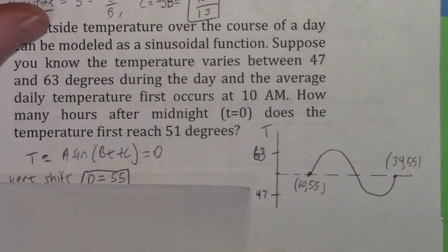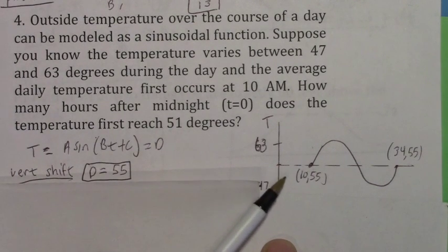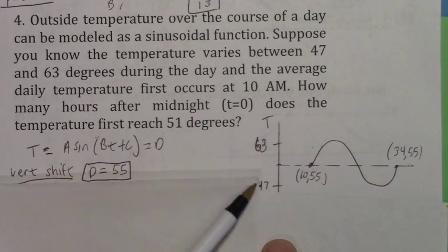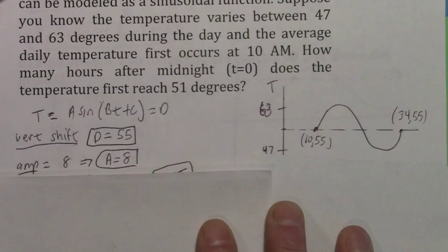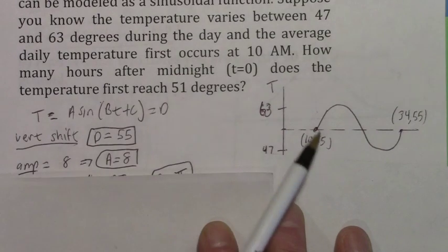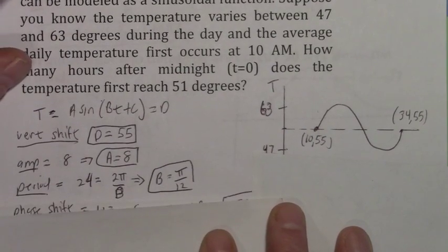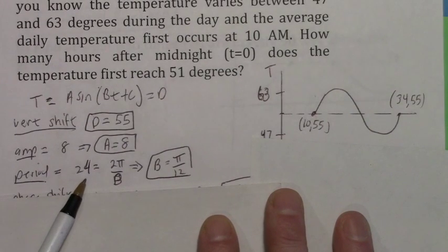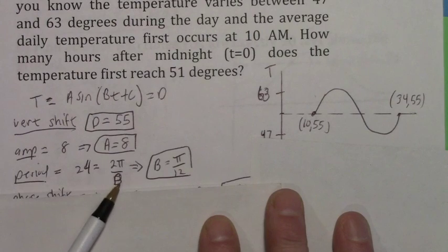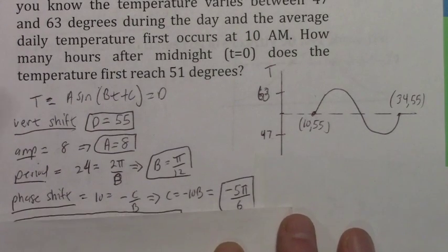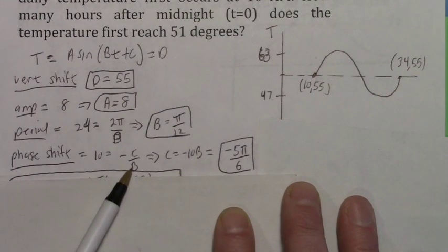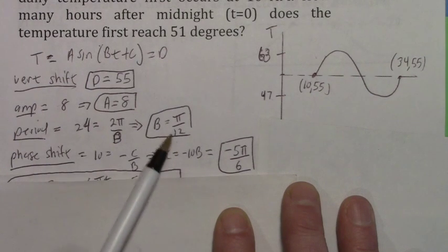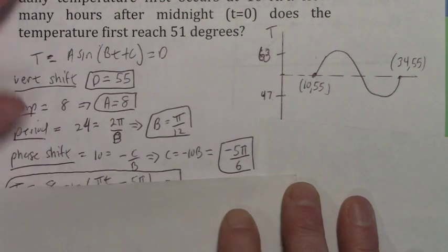The vertical shift is the average of 47 plus 63, which equals 55. The amplitude, measured from the vertical shift, is 63 minus 55 equals 8, and it's positive 8 because the graph goes up. The period is 24 hours (over a course of a day), so 24 equals 2 pi over b, giving b equals pi over 12. The phase shift is 10, so c equals negative 10b equals negative 10 times pi over 12, giving negative 5 pi over 6. The equation is d equals 8 sine(pi/12 · t minus 5pi/6) plus 55.